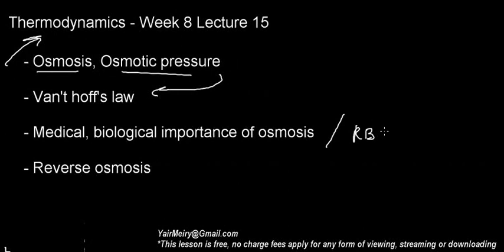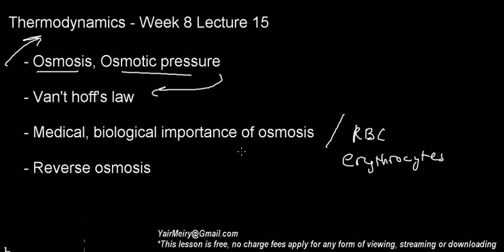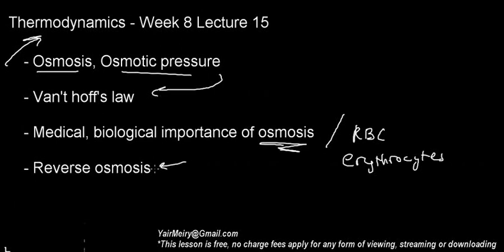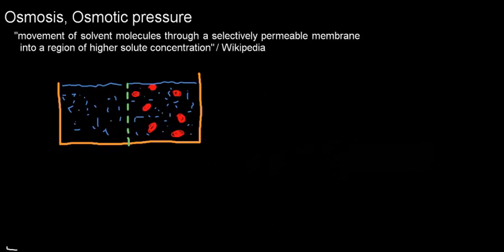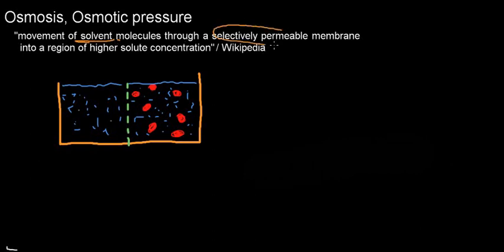We're just going to review the red blood cell implications — the erythrocyte implications on osmosis. And what is reverse osmosis? This is a definition from Wikipedia; by far it is not one of my research resources, but they have really good definitions. It is the movement of solvent molecules through a selectively permeable membrane into a region of higher solute concentration. These are the words you want to incorporate in your definition.